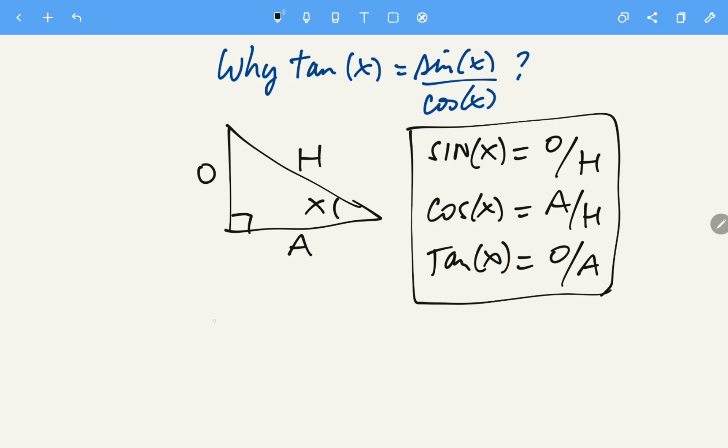So if we start from sine of x over cosine, using these formulas right here, we replace. So replacing, we have opposite over hypotenuse divided by adjacent over hypotenuse.